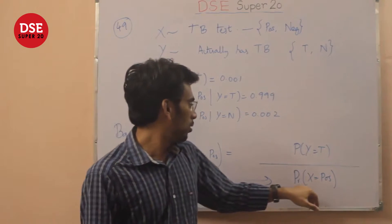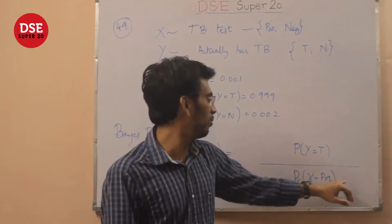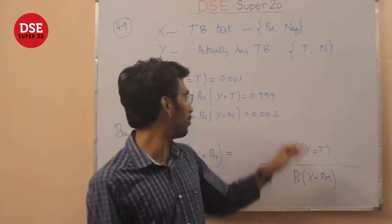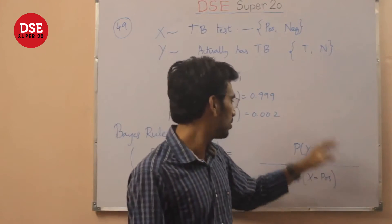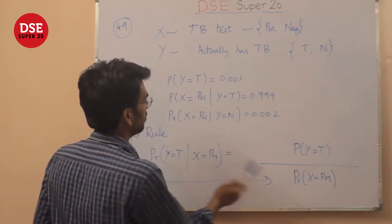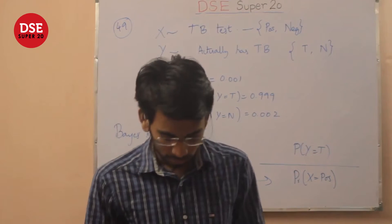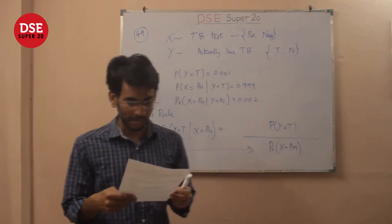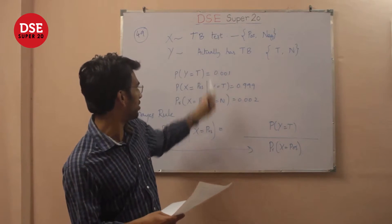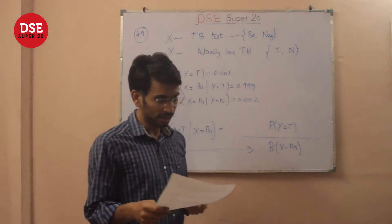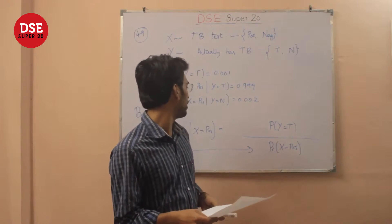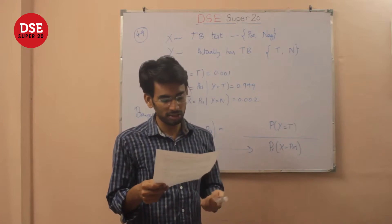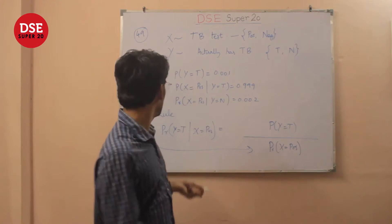Using the well-known Bayes' rule: P(X = positive) equals P(X = positive | Y = TB) × P(Y = TB) plus the same term for Y = not TB. By substituting the values, we get that the probability the person actually has TB given the test returned positive is 1/3. That is quite a low probability given that the test is actually very accurate — this is the magic of Bayes' rule and conditional probability.